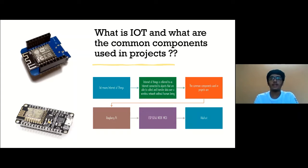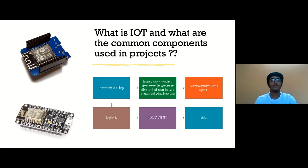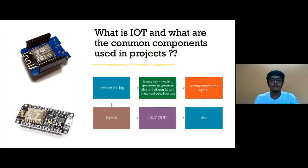So what is IoT and what are the common components used in IoT projects? IoT means Internet of Things — objects connected to the Internet that are able to collect and transfer data over wireless technology without any human involvement. The common components used in IoT projects are Raspberry Pi, ESP8266, NodeMCU, and Adafruit.